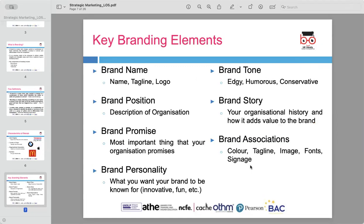There are several key elements that contribute to a strong brand. The brand name is one of the most visible elements, often accompanied by a tagline and logo. Together, these create the first impression of the brand and help customers identify it quickly. The brand position describes how the organization wants to be perceived by its target market — it communicates what the brand stands for and what makes it different from competitors.